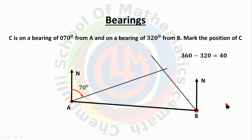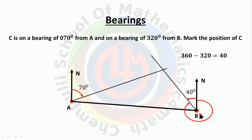We drew a 40-degree anti-clockwise line at B. But the required bearing is 320 degrees clockwise. Using the angle-around-a-point property (360 degrees total), 360 minus 40 equals 320 degrees — confirming the clockwise bearing of C from B is 320 degrees. The north direction is always taken as the reference.